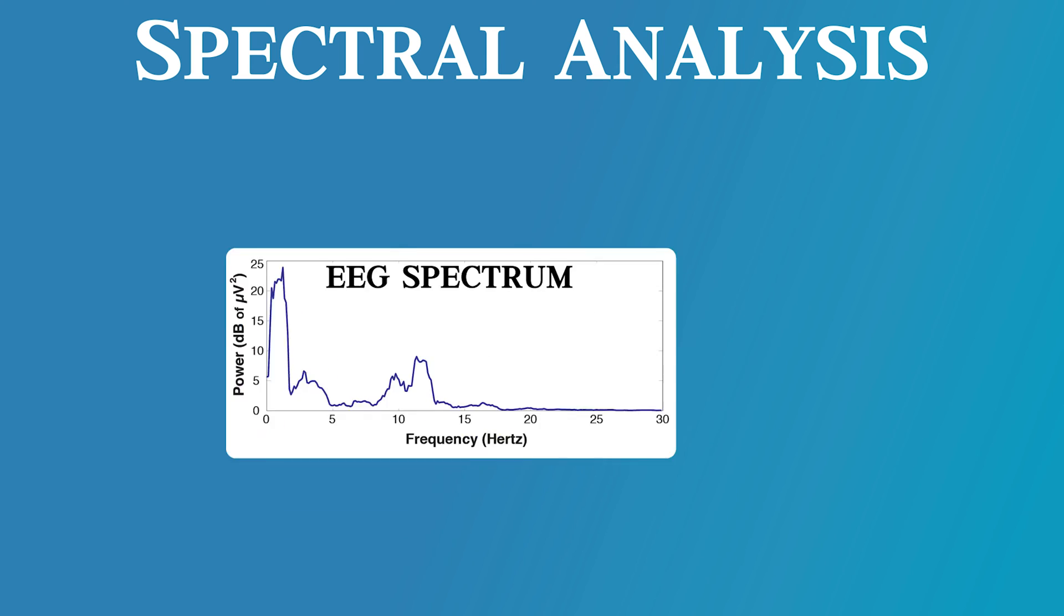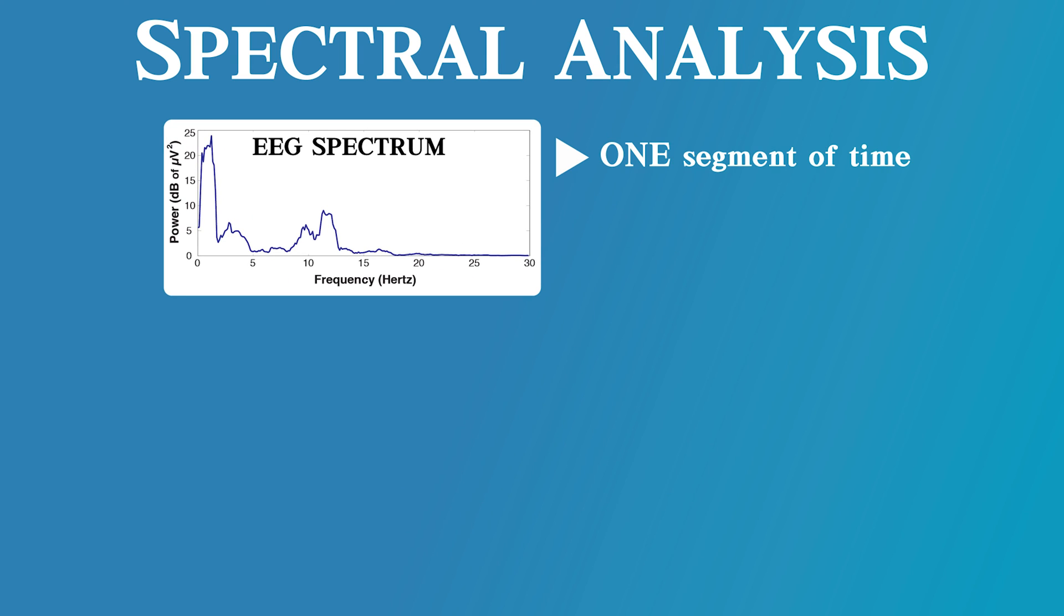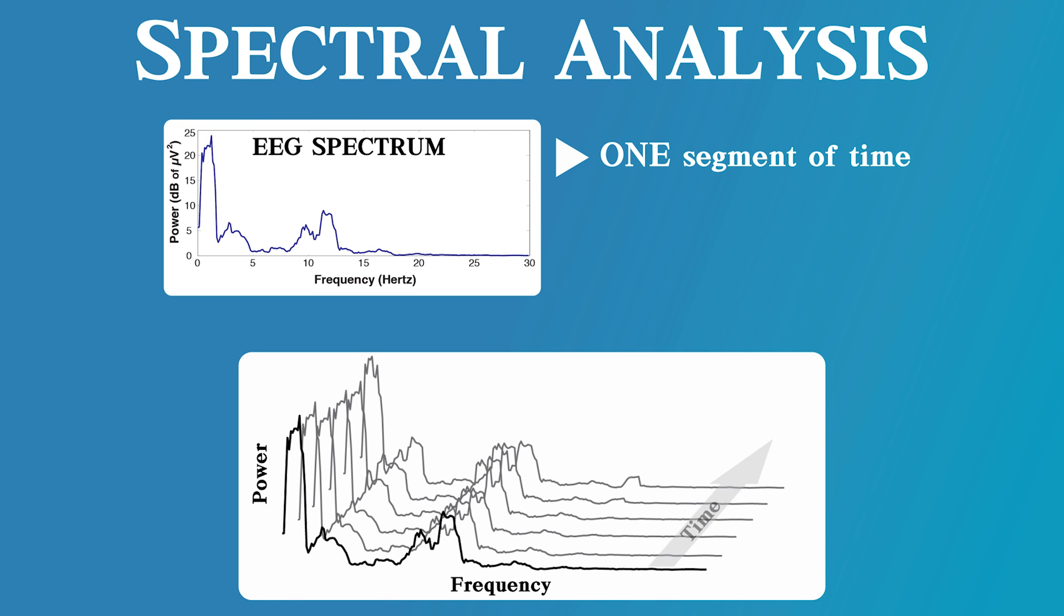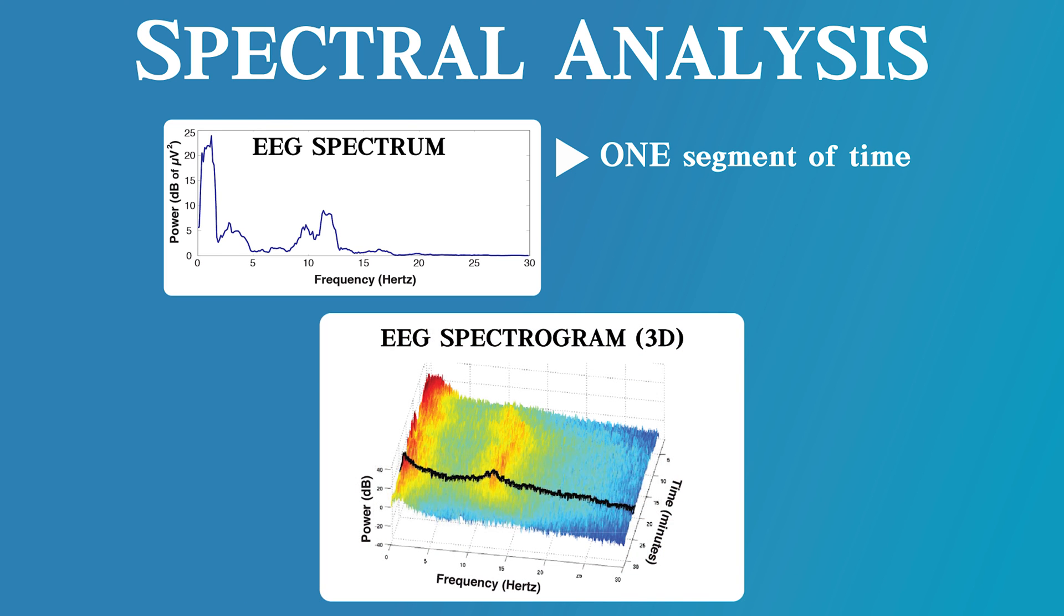However, the spectrum is for one segment of time, and in the OR, we want to see the evolving pattern of the EEG. To do this, the spectrum is calculated at each instant in time, and then each successive spectrum plot is stacked together as time progresses. This results in a three-dimensional plot called the spectrogram, where we have frequency, power, and time on the axes.